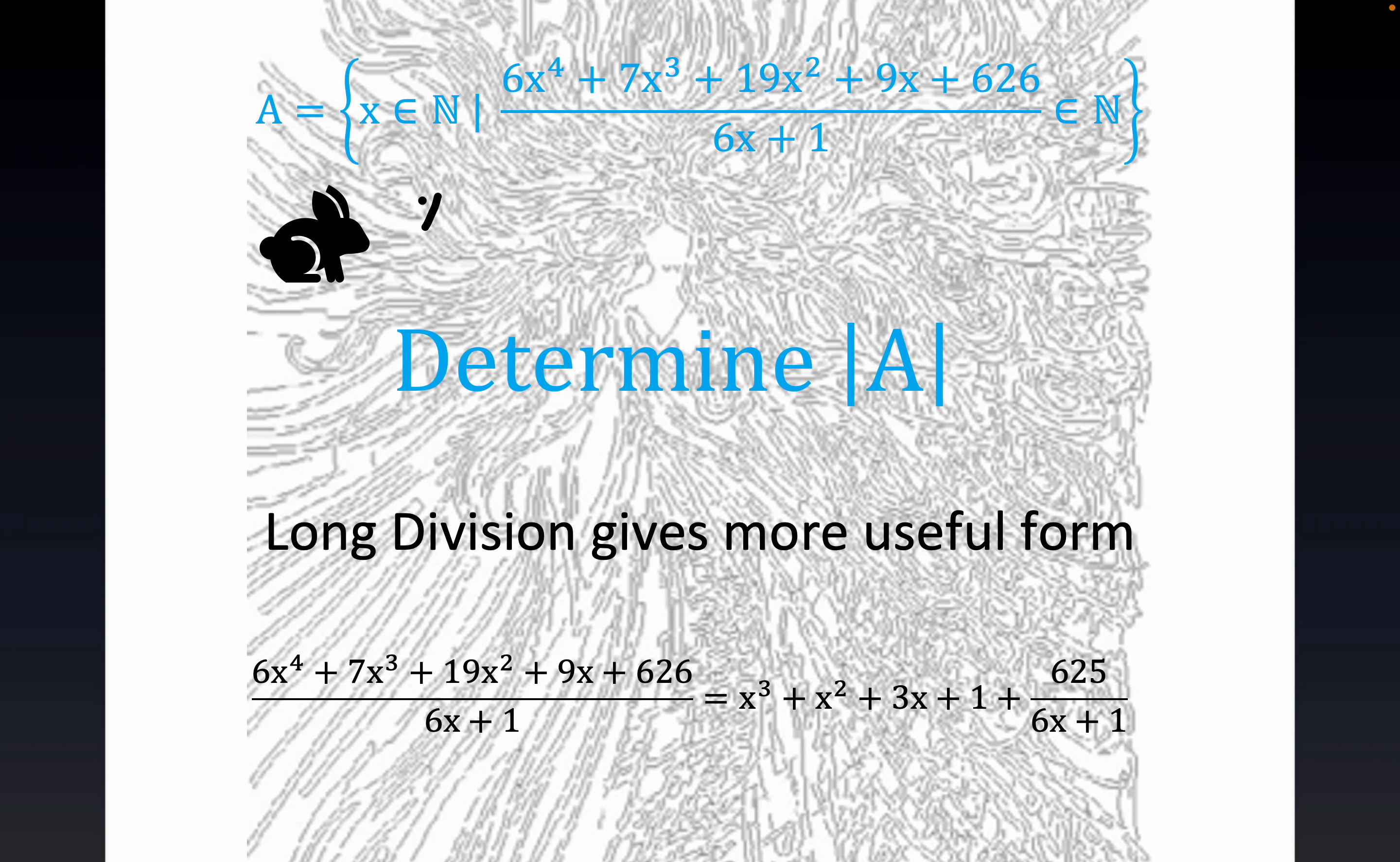Figure out the cardinality of a peculiar set here. And so let's just notice real quickly, x equals zero. This reads all the x's that are natural numbers, that is positive integers, such that this entire quotient resolves to a natural number.